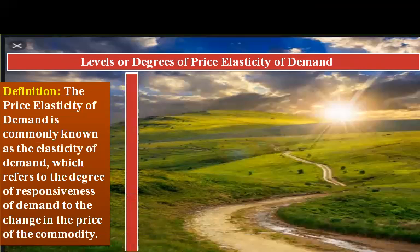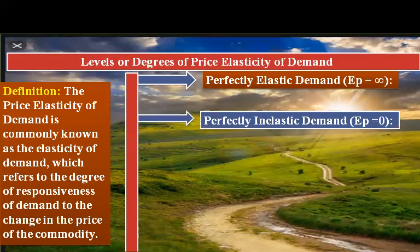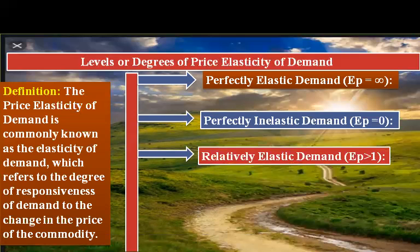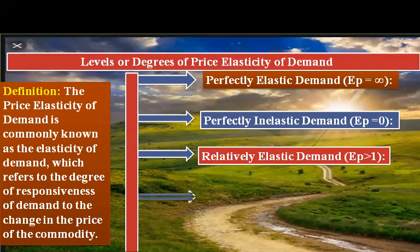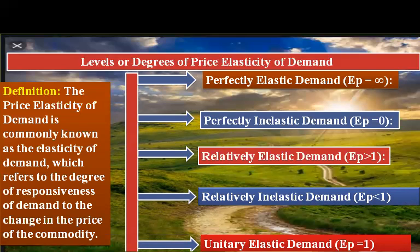Now we are going to see the levels or degrees of price elasticity of demand. The first one is perfectly elastic demand. The second is perfectly inelastic demand, where elasticity is equal to zero. Third is relatively elastic demand, where elasticity is greater than one. Fourth is relatively inelastic demand, where elasticity is less than one. Fifth is unitary elastic demand, where elasticity is equal to one.